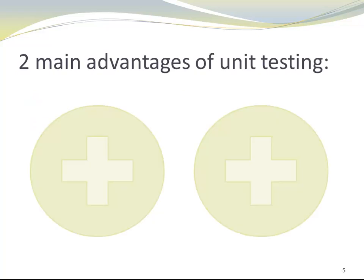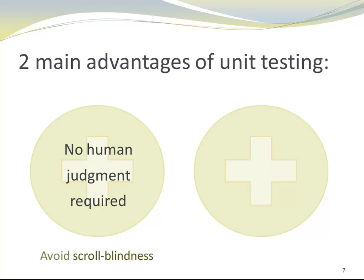Let's look at two main advantages of using unit tests. One of them is that no human judgment is required. This avoids scroll blindness. Sometimes programmers use print statements to track the state and correctness of the code. When the number of print statements gets too big, humans tend to be affected by scroll blindness — a state when they are no longer able to process information in a meaningful way and scroll right past the very output that indicated the problem.